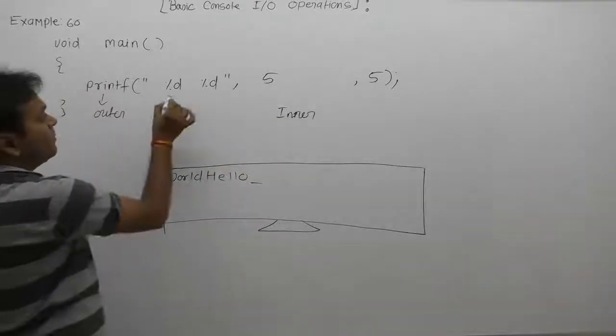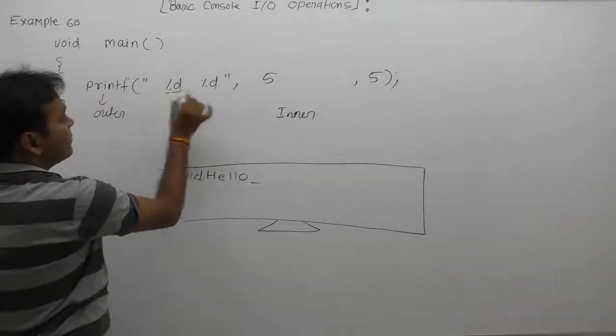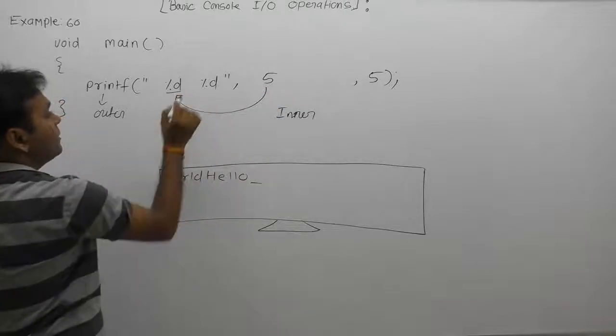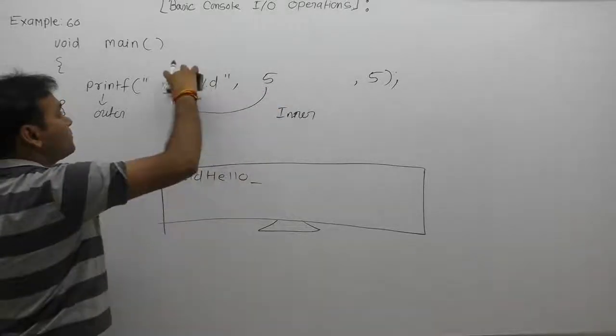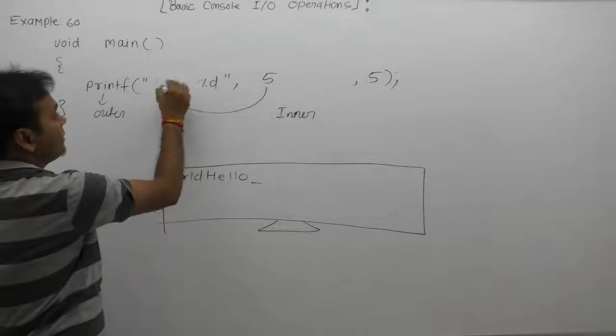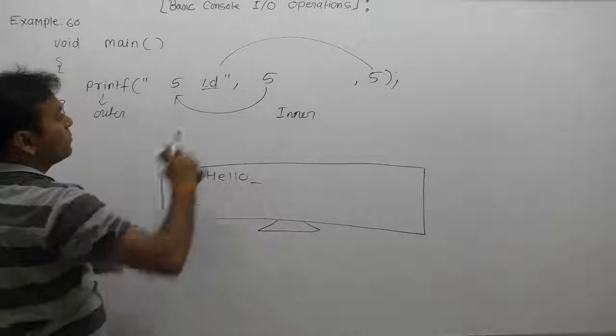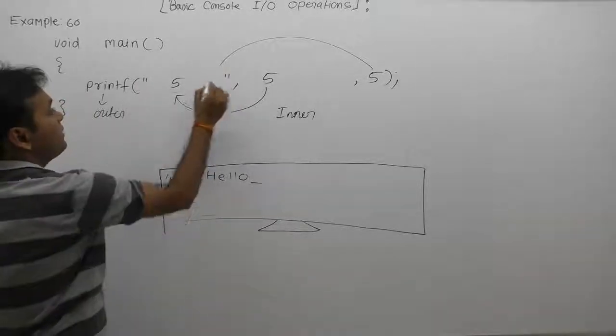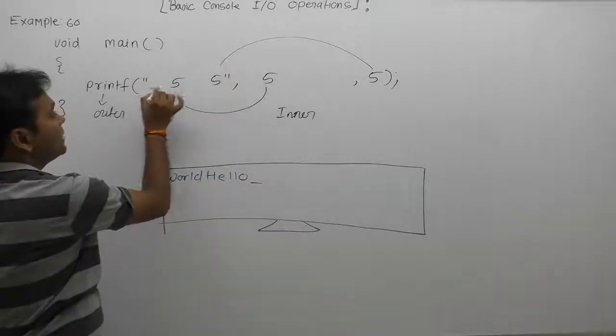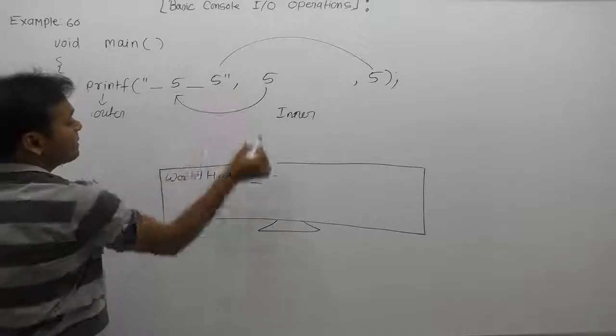According to outer printf, in place of first percent d, we are replacing first argument which is 5. Like that. Same as in place of second percent d, we are replacing next argument also 5. Then final message becomes space 5, space 5.